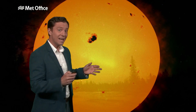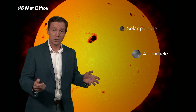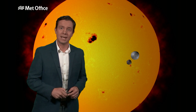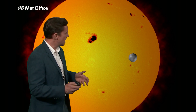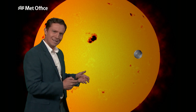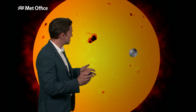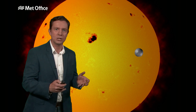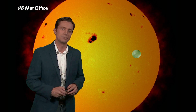In short, what happens is a high-energy particle from the sun collides with a low-energy particle in the atmosphere. The energy is transferred from one to the other, and the air molecule becomes unstable with this additional energy. It radiates it away in the form of light.